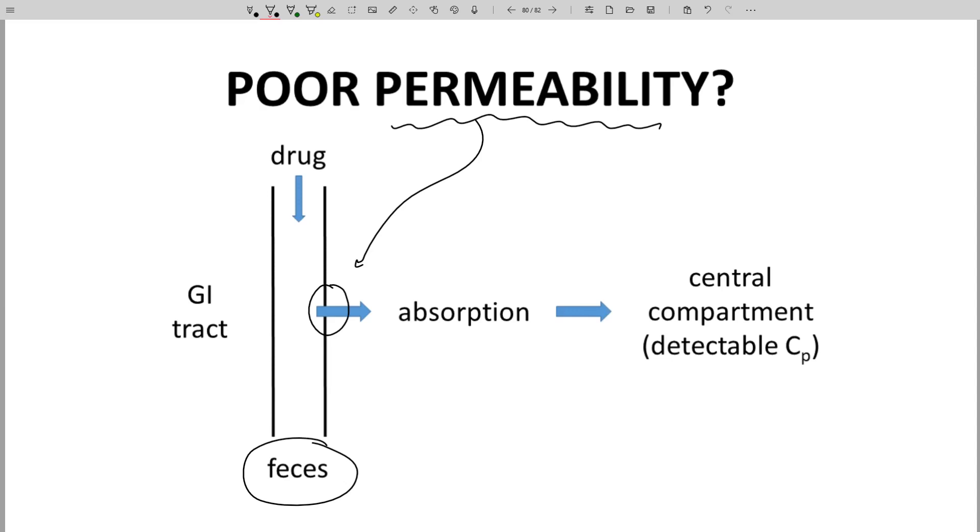However, during lead optimization, leads with poor permeability rarely advance deep in the program. Therefore, poor permeability would be an uncommon explanation for low bioavailability in a marketed drug.